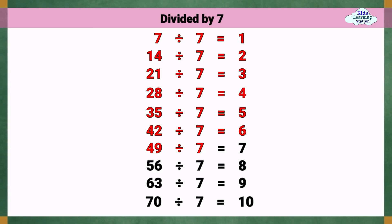49 divided by 7 equals 7. 56 divided by 7 equals 8. 63 divided by 7 equals 9. 70 divided by 7 equals 10.